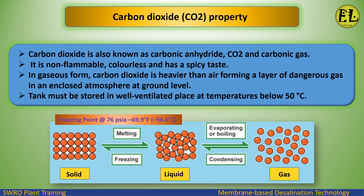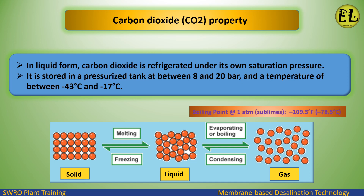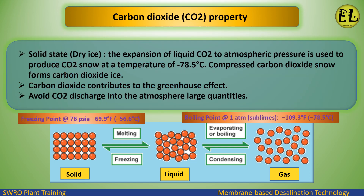Carbon dioxide is heavier than air, forming a dangerous gas layer at ground level in enclosed atmospheres. Storage tanks must be kept in well-ventilated places at temperatures below 50°C. In liquid form, CO2 is refrigerated under its own saturation pressure, stored in pressurized tanks at 8 to 20 bar and temperatures between -43°C and -17°C. In solid state (dry ice), expansion of liquid CO2 to atmospheric pressure produces CO2 snow at -78.5°C.